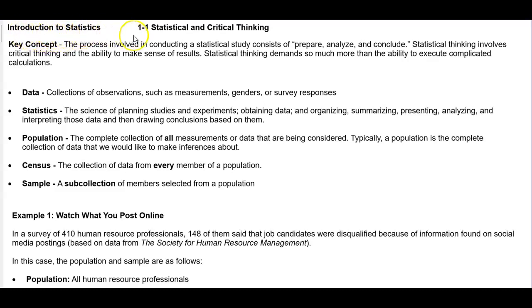Introduction to Statistics, Section 1.1 Statistical and Critical Thinking. The key concept of this section is that the process involved in conducting a statistical study consists of prepare, analyze, and conclude. Statistical thinking involves critical thinking and the ability to make sense of results. Statistical thinking demands so much more than the ability to execute complicated calculations.